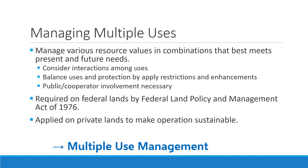Another approach addresses the challenge of multiple uses. Rangelands have a variety of values on any one piece of land, and the Federal Land Policy and Management Act of 1976 — FLPMA — said that federal land managers would manage with these various uses in mind. The definition of multiple use in that act is that land managers would manage various resources and values in combinations that best meet the needs of present and future generations. FLPMA requires agencies to consider interactions among uses, and to balance and protect those values they generally apply restrictions or enhancements.